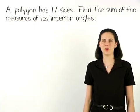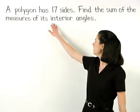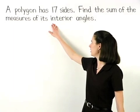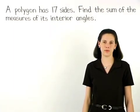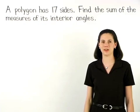In this problem, we're given that a polygon has 17 sides, and we're asked to find the sum of the measures of its interior angles.